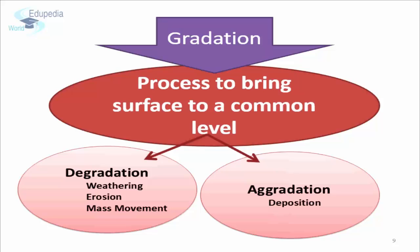Gradation itself can be seen as consisting of two processes: aggradation, the process by which the level of low land is raised, and degradation, the process by which the level of high land is brought down.